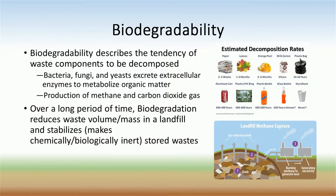Finally, biodegradability describes the tendency of waste components to be decomposed by microorganisms. Waste which is high in volatile organic matter, such as food waste and certain paper products, is much more susceptible to biodegradation than other types of waste. These wastes are reduced in volume in landfills by resident bacteria, fungi, and yeast, which excrete extracellular enzymes to help metabolize the organic matter. During this process, solid waste is transformed in part into gaseous components like methane and carbon dioxide. In a landfill, biodegradation helps to reduce waste volume and weight and stabilizes the waste material. If a gas collection system is built into a landfill, methane can be captured and used for on-site energy generation.